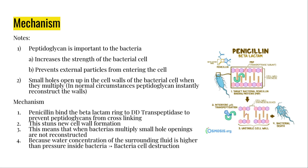Going a little bit deeper — penicillin acts on peptidoglycans, which are essentially the cornerstone of bacterial cells. The role of peptidoglycans is to create a mesh-like web structure around the plasma membrane to increase the strength of bacterial cell walls and prevent external particles from entering. What penicillin does is bind the beta-lactam ring to the DD transpeptidase to prevent peptidoglycans from cross-linking to each other. This also stunts new cell wall formation, which means holes will form in the cell walls during bacterial multiplication.